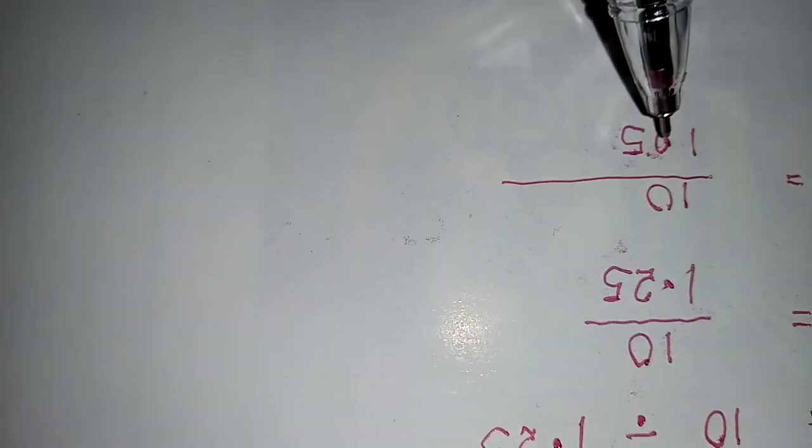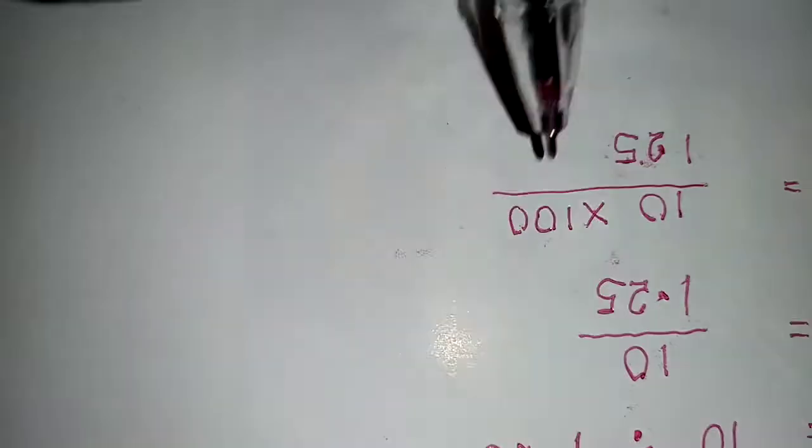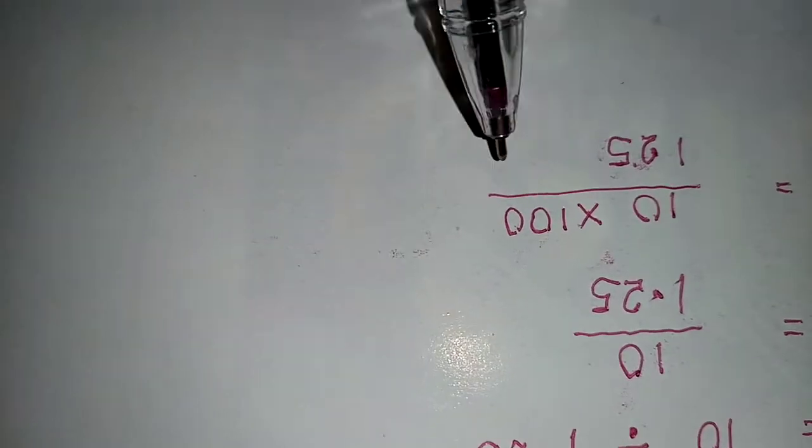So now we have removed the decimal place. That means multiply the numerator by 100. Because we remove this by two decimal places.